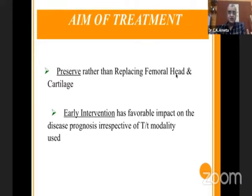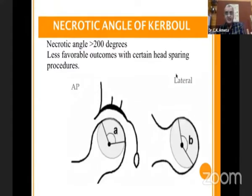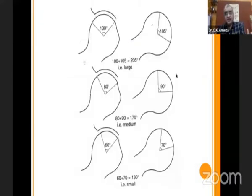The basic aim of medical management is to preserve the normal head and avoid femoral head and cartilage damage. Early intervention has a favorable impact on disease prevention and the surgical treatment modality used. Clinically, if the sum of the necrotic area is more than 200 degrees, these cases are not fit for medical management. If it's less than 130 degrees, or in the medium range around 170 degrees, we can try for medical management. Medical management is planned for small or asymptomatic lesions, or when surgery is contraindicated or declined by patients, or as a bridge until arthroplasty is needed.